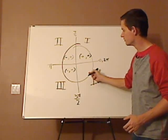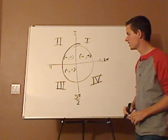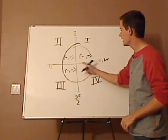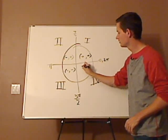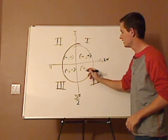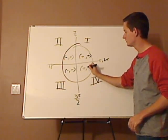And in quadrant 4, what are the signs? Yeah, your x's are positive here and your y's are negative.